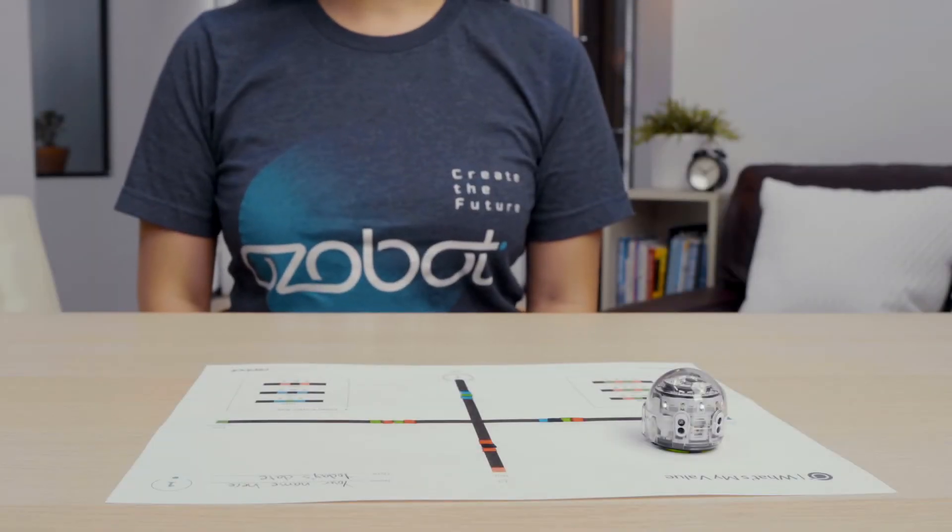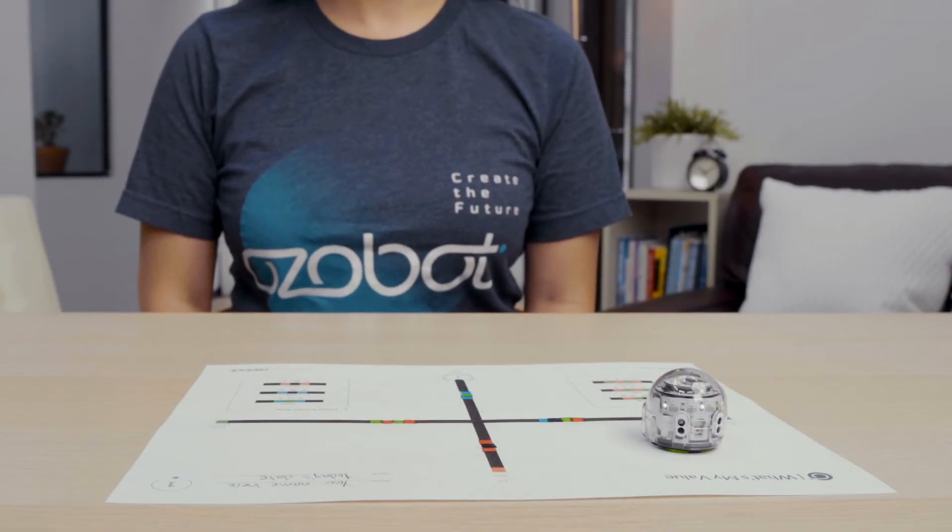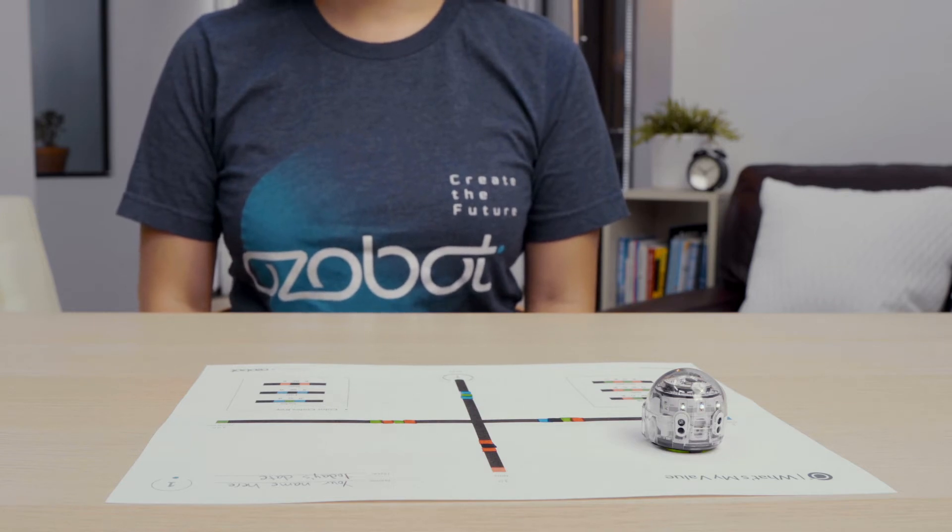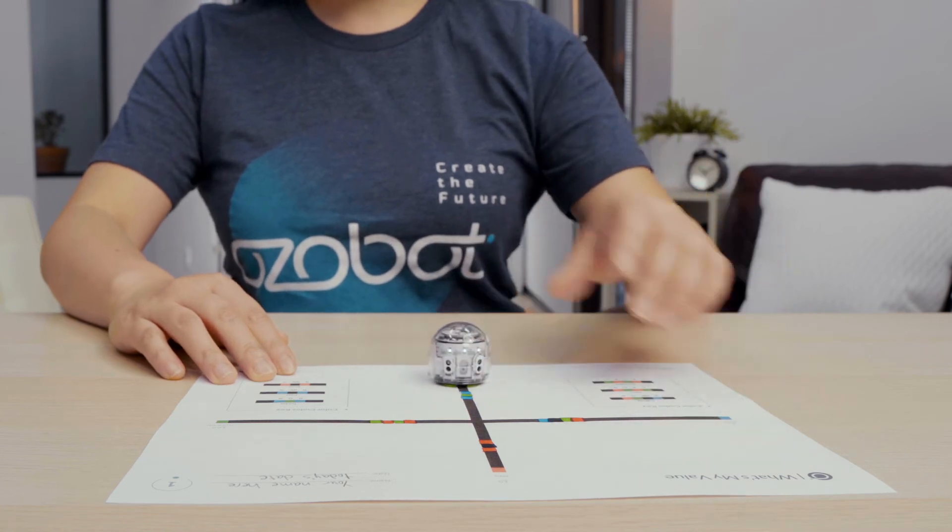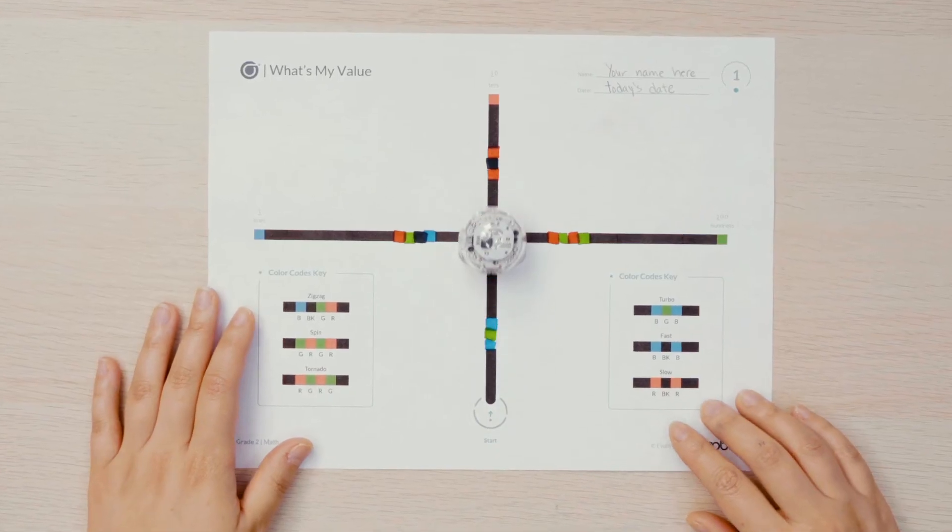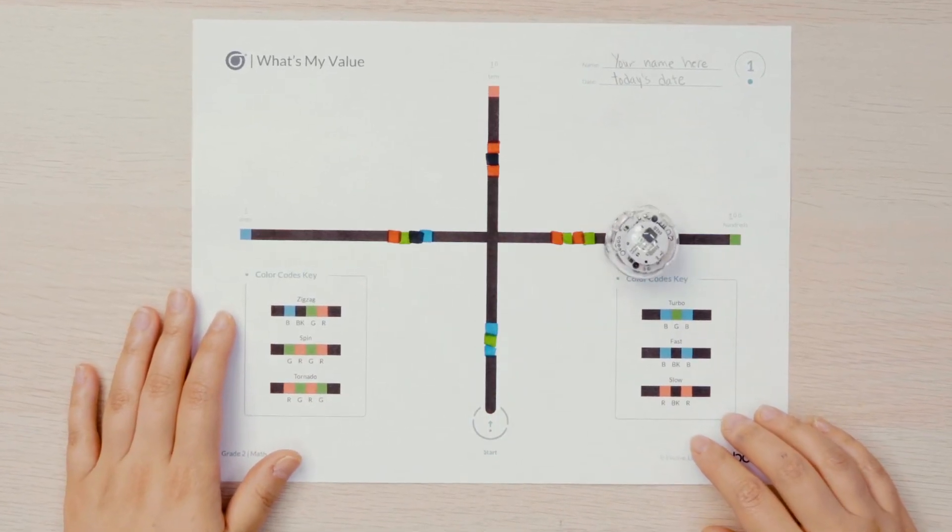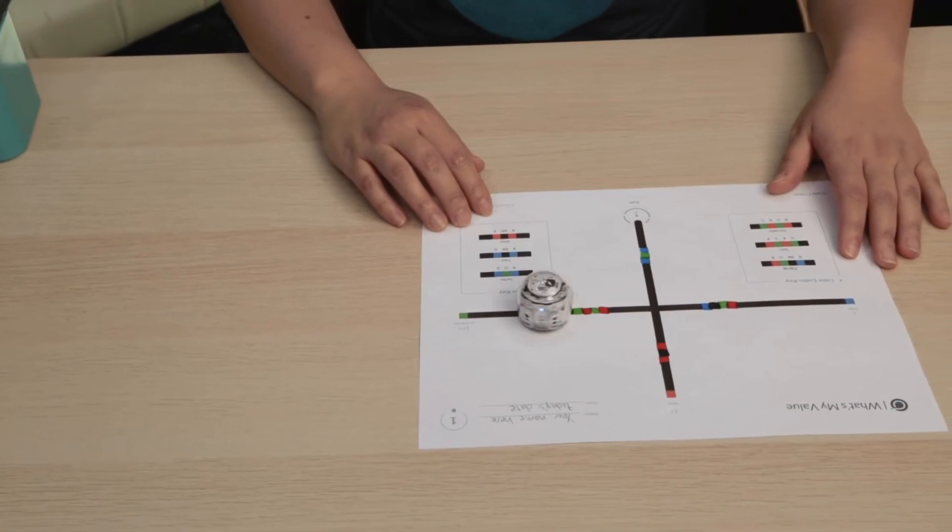Let's see how Ozobot chooses the place value randomly using lines and color codes on the map. Watch my bot in action. First, I'll put my Ozobot on start and watch it move to choose a random place value: ones, tens, or hundreds.